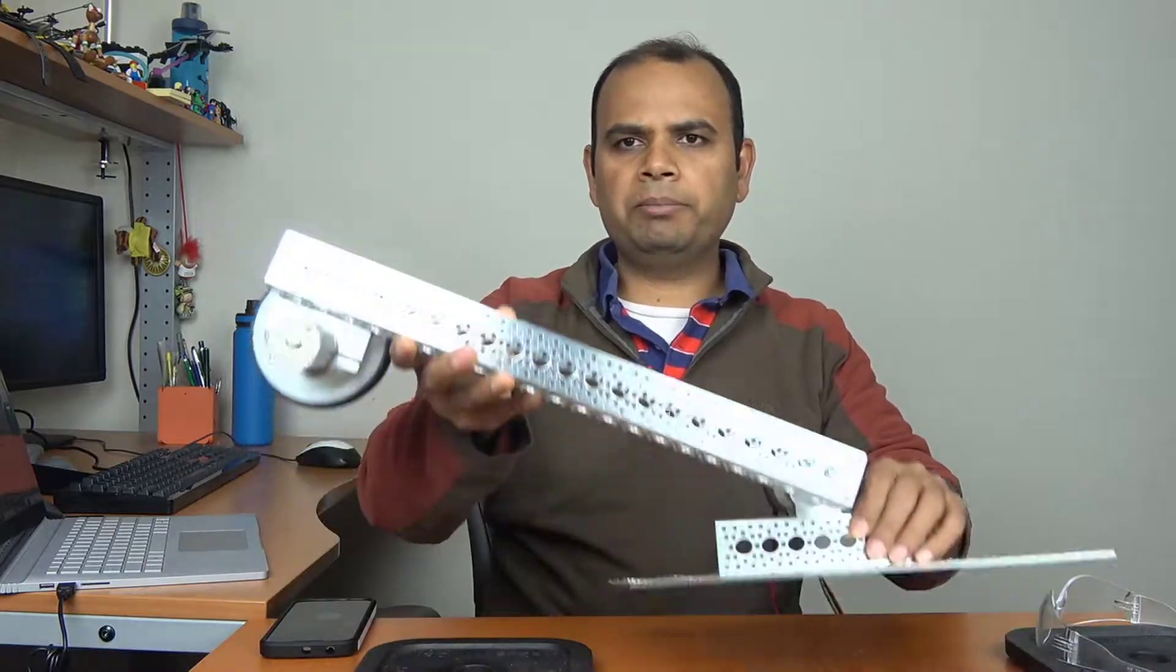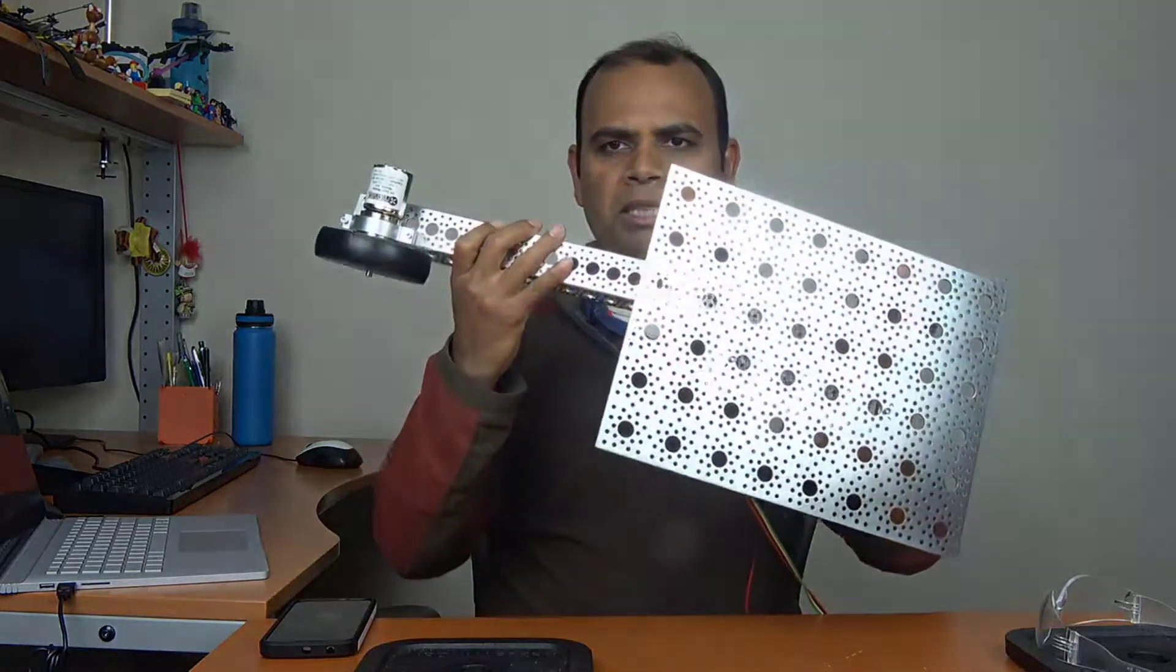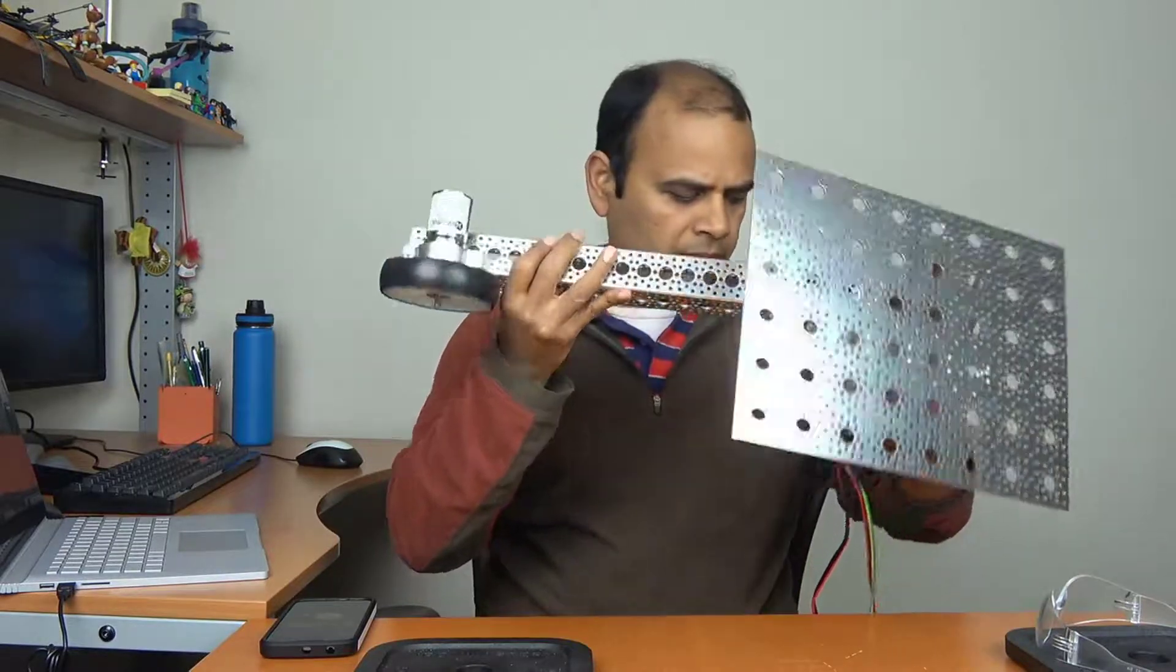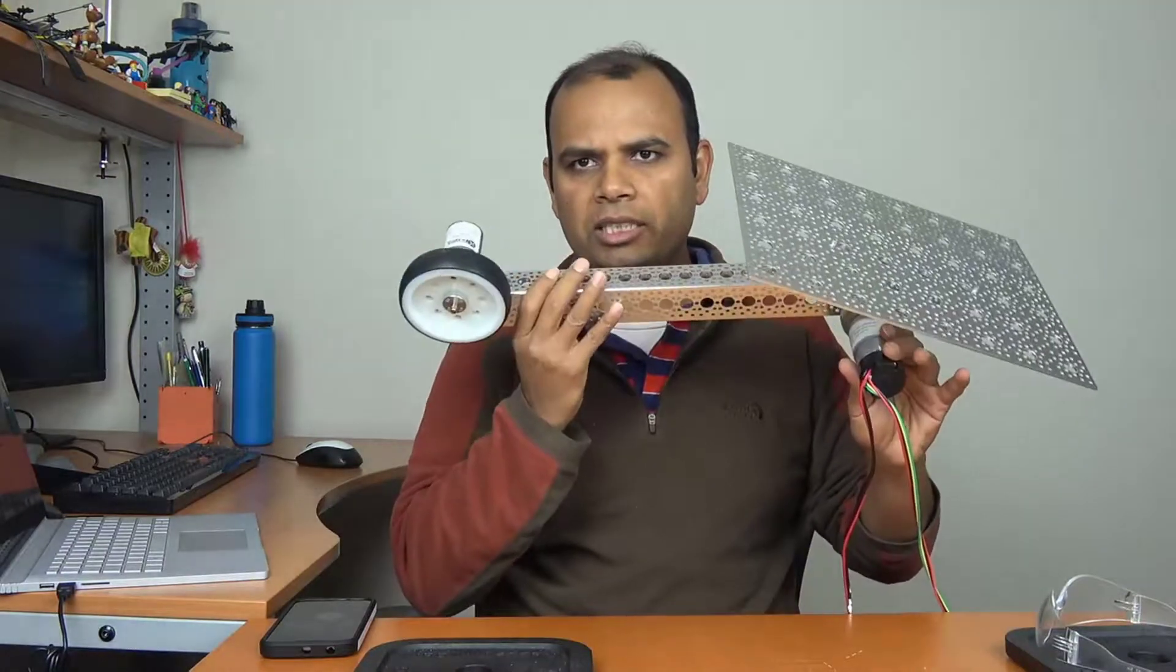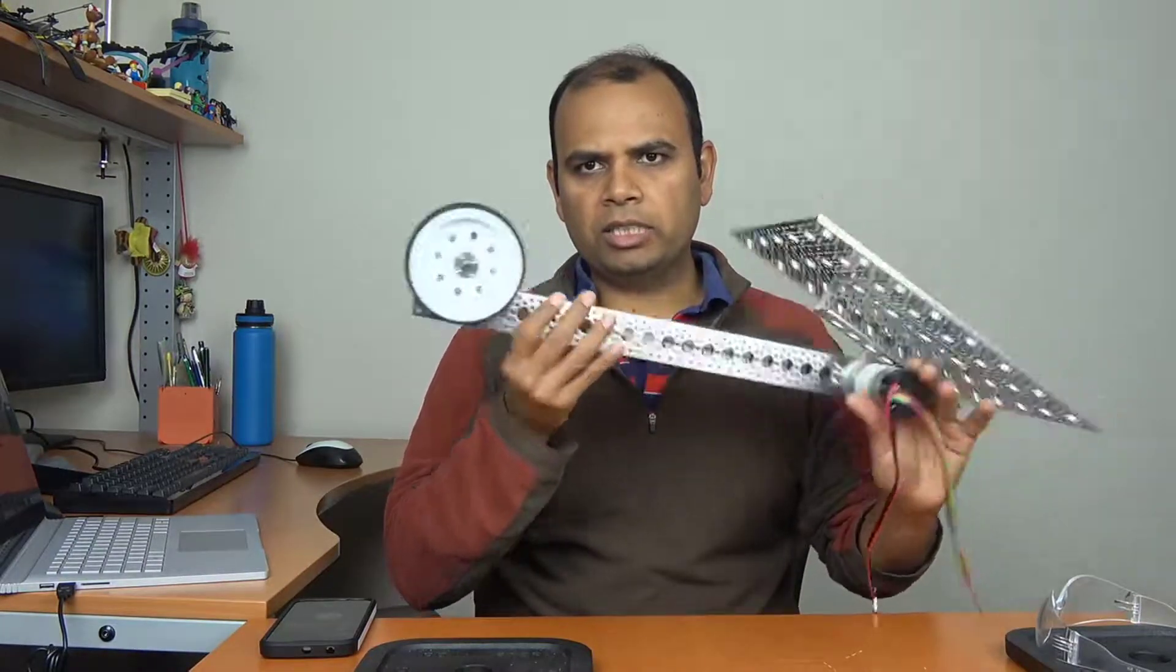For example, here is the arm that I built up, and I built it in a really simple manner. There's a base plate here and there's an Andymark NeveRest 40 motor over here, and then it is mounted directly. There are no gears or anything connected to this thing. It's just flat, as you can see over here.